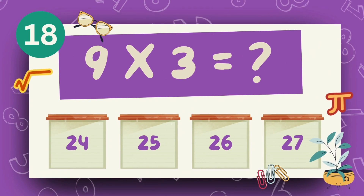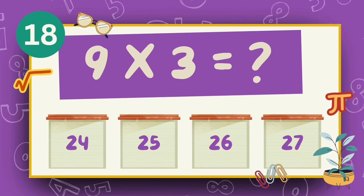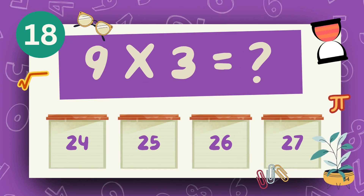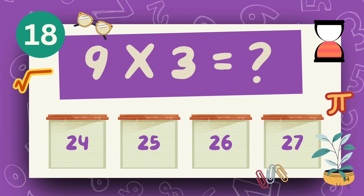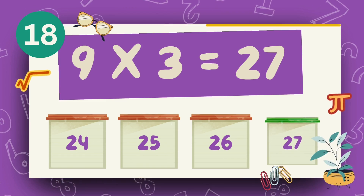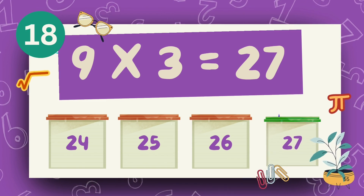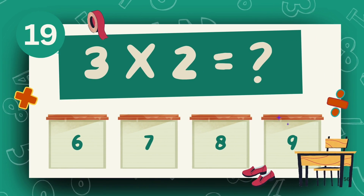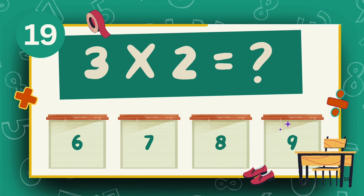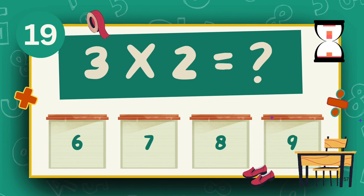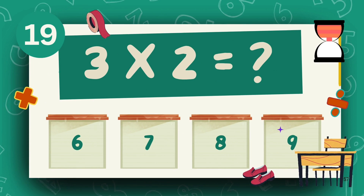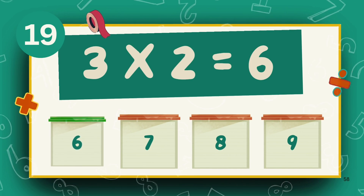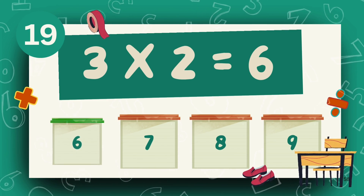What is 9 multiply 3? The answer is 27. What is 3 multiply 2? The answer is 6.